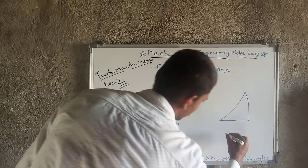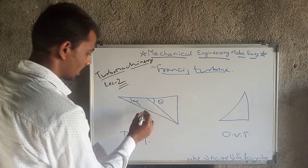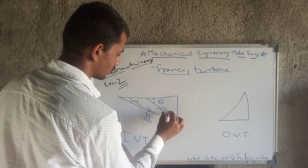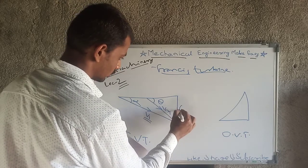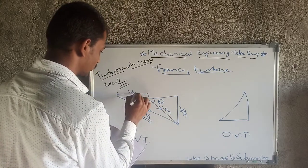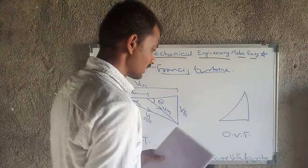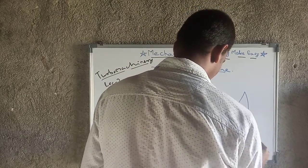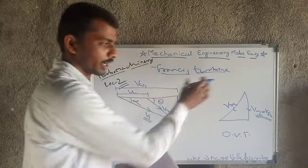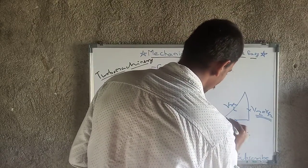This is the inlet velocity triangle and this is the outlet velocity triangle. The terms are: α (alpha) is the angle for absolute velocity, θ (theta) is the angle for relative velocity. The flow component of velocity is Vf1. Between absolute and relative velocity there is U1 (blade speed), and between absolute and flow velocity there is the whirl component Vw1. At outlet: Vr2 is relative velocity, and the special case of Francis turbine is that V2 = Vf2, meaning absolute velocity at outlet equals flow velocity at outlet.